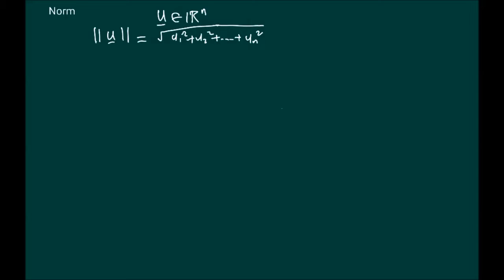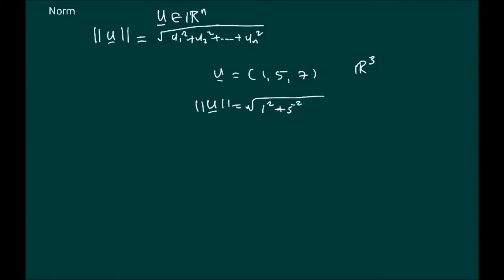This is called the norm of the vector, or the magnitude. A quick example: suppose we have u equals (1, 5, 7), which means we are dealing with R3. Then the norm of u is simply the square root of 1 squared plus 5 squared plus 7 squared, which equals the square root of 75. That's as simple as that — just calculating the norm of the vector.